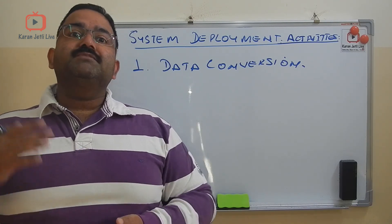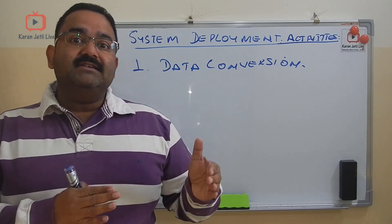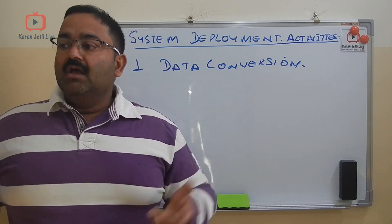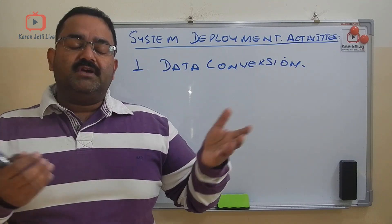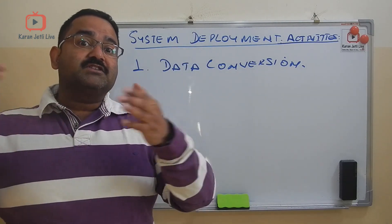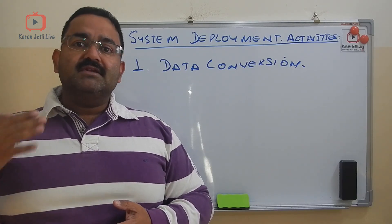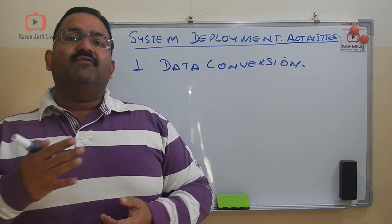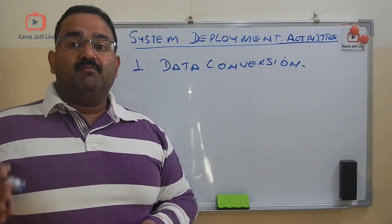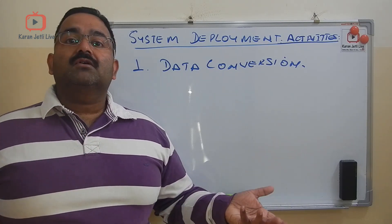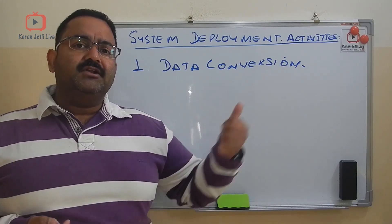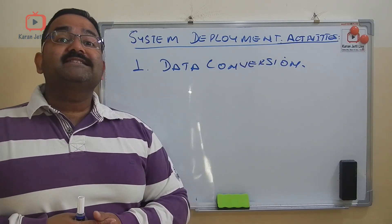If the old system is already using a computerized system, that makes our job a little easier because we do not need to enter a huge volume of data, but we still need to convert it to the new system. For example, if the old system stores data in Excel spreadsheets and the new system uses a modern RDBMS, then all those spreadsheets must be converted into Oracle tables or any RDBMS tables. All these activities of converting the old data into the new format come in the first stage, because data conversion is very important — if there is no data, the system will not work. So we must convert the old data so it can be used by the new system.